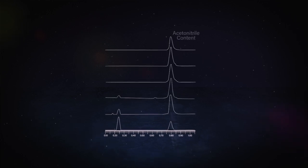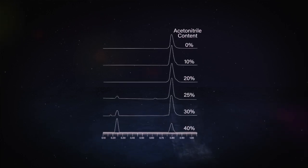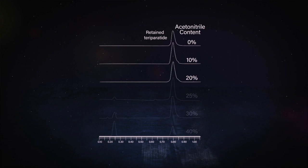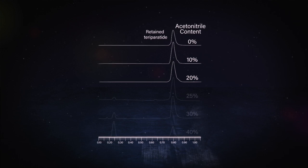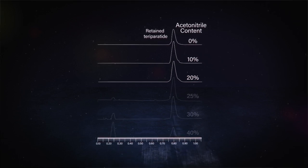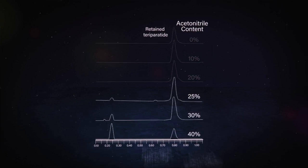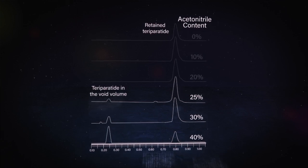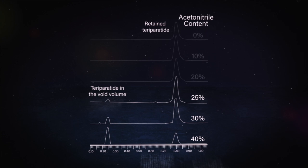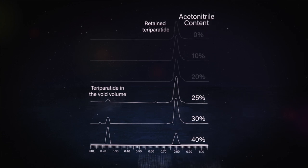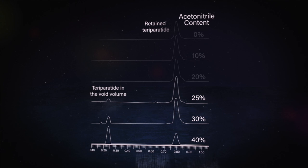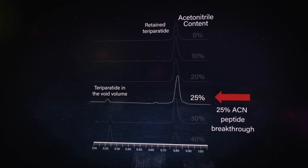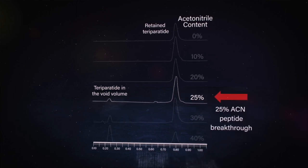Let's take a look at what the chromatography looks like. When we look at the actual chromatography with those different acetonitrile contents, you can see that at zero percent all the way up to about 20 percent, the teriparatide is completely retained on the column. But as we get up to 25 percent and higher — where we would have to go for the other sample containers — the teriparatide is actually starting to break through and we're getting it in the void volume. Since we'd traditionally be looking for quantification of this peptide, that's really not going to help us get the result we need. We actually need to be at a lower concentration of acetonitrile than 25 percent.